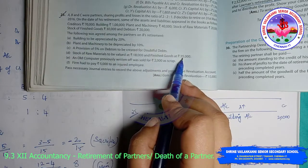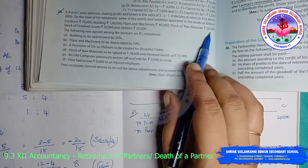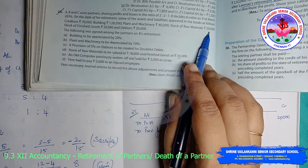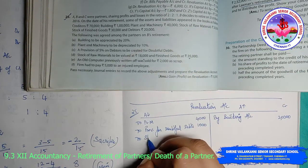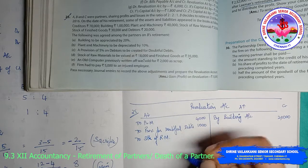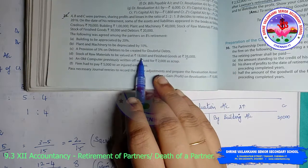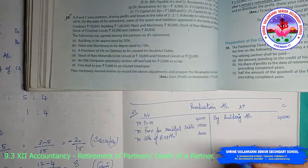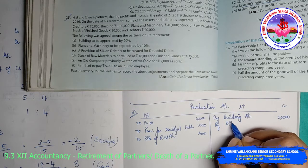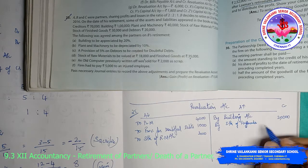Stock of raw materials to be valued at 18,000 — it was 20,000 in books, now valued at 18,000, so 2,000 is depreciated; debit stock of raw materials 2,000. Finished goods were previously 30,000 but now valued at 35,000 — asset increases — so credit by stock of finished goods account 5,000.